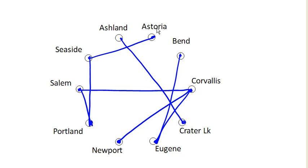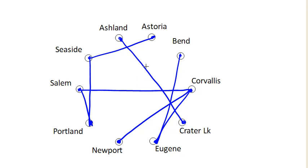How about Eugene to Ashland? I don't see any issue here — Eugene to Ashland is fine, and now we're finally done. Notice that before we added that edge, the Ashland to Crater Lake connection was not connected into the rest of the graph, but by adding Eugene to Ashland, we now have a connected graph. That is our minimum cost spanning tree with a total length of 695 miles.